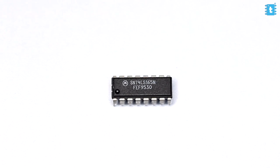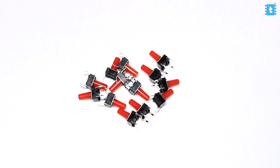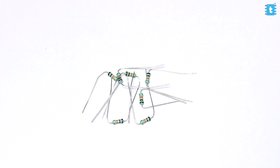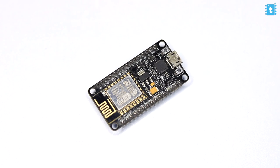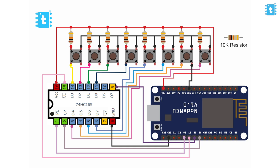Now let's practically test it out. For testing, we'll be using a 74165 IC, a couple of push buttons, a couple of pull-up resistors, and a NodeMCU board. We'll be making their connections according to the connection diagram shown.